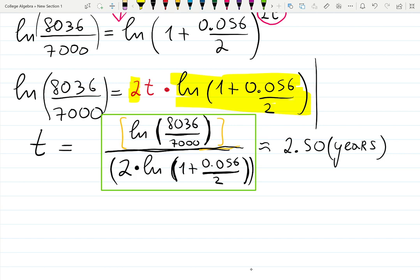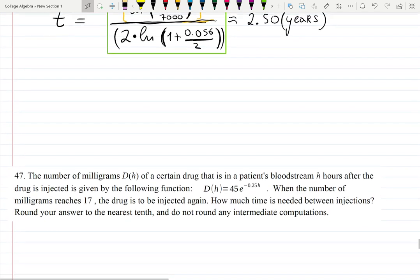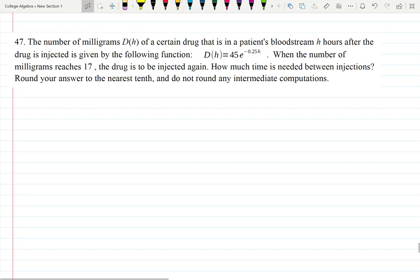And that's how you solve exponential equations. This example is talking about some drugs. So we're going to have a number of milligrams d(h), that's a certain drug that is in the patient's bloodstream. h is my time, number of hours, that's why it's h, after the drug is injected.